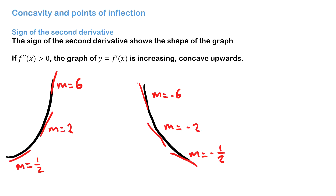What that means is that the gradient is increasing as we go further along the graph. A common example you should know that is concave upwards is a concave up parabola — as we go from left to right the gradient is increasing.